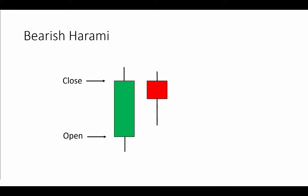A bearish harami is a reversal at the end of an uptrend with the following conditions: the two prior bars are up closes, the prior bar is a large body bar, and the current is a small body bar. The body of the small one is contained within the large body bar, and the open is at or above the close — again subject to the one tick rule, which can also allow a one tick open just below the close.